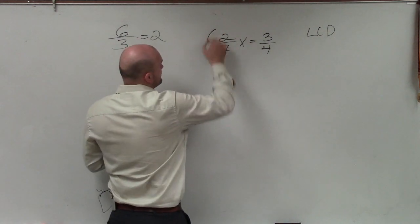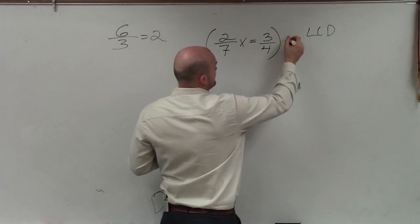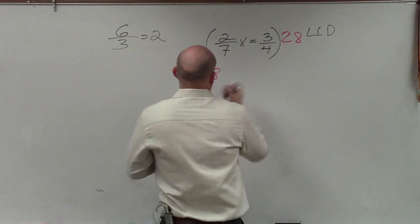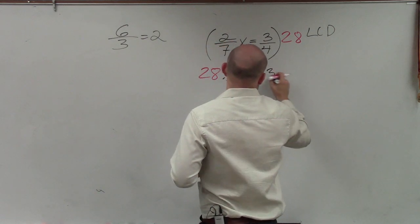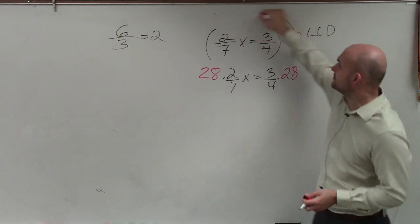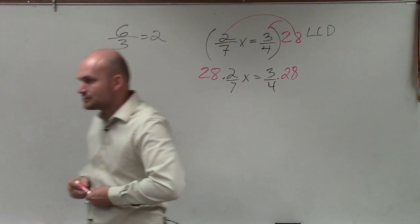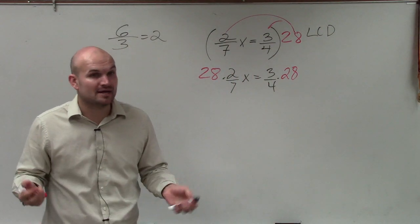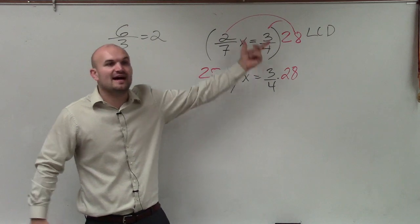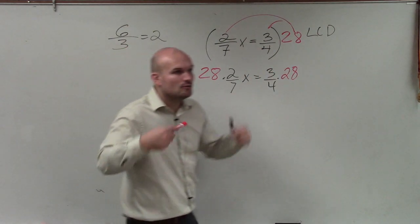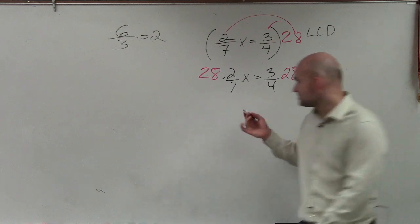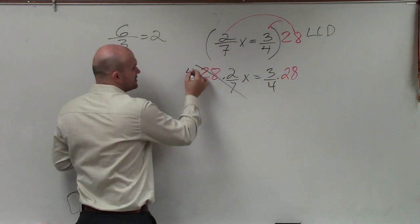So what I'm going to do is multiply this whole equation by 28 — everything by 28. So we get: 28 times 2/7 x equals 3/4 times 28. We applied the distributive property here. You don't need to actually multiply 28 out fully, because 28 was the least common denominator — the smallest number that both 7 and 4 divide into. How many times does 7 divide into 28? Four times. So I can simplify that fraction and just write 4.